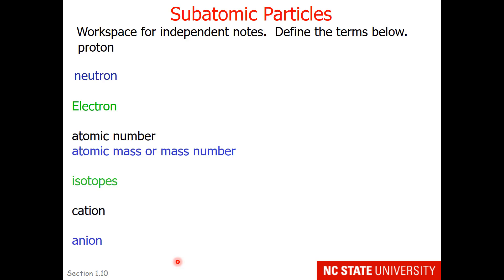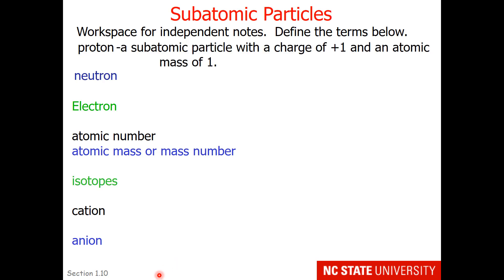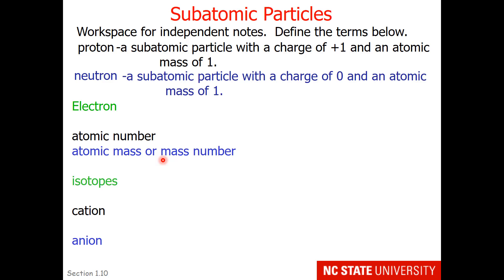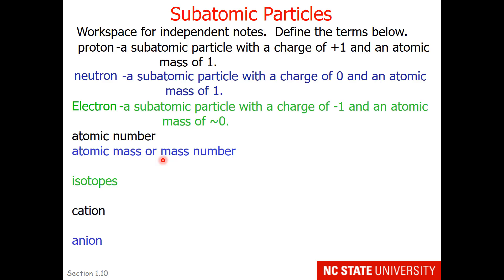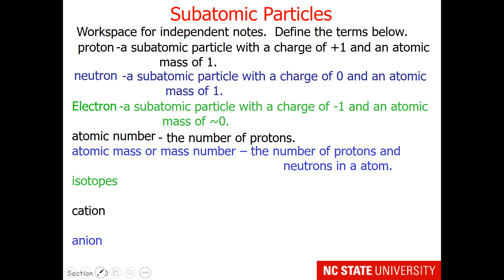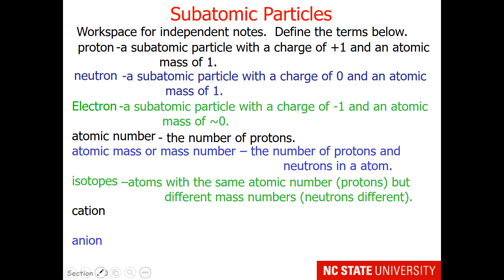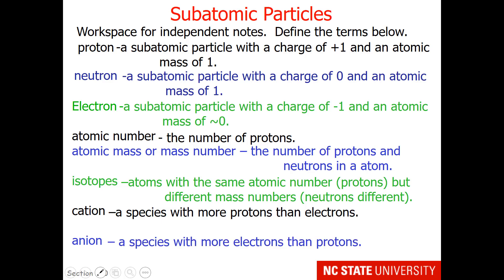Here are some key vocabulary terms. A proton is a subatomic particle with a charge of plus 1 and an atomic mass of 1. A neutron is a subatomic particle with a charge of 0 and an atomic mass of 1. Atomic number is your number of protons. Atomic mass, also called mass number, is the number of protons and neutrons in an atom. An isotope refers to atoms with the same atomic number but different mass numbers. A cation is a species with more protons than electrons, giving it a positive charge. An anion is a species with more electrons than protons, giving it a negative charge.